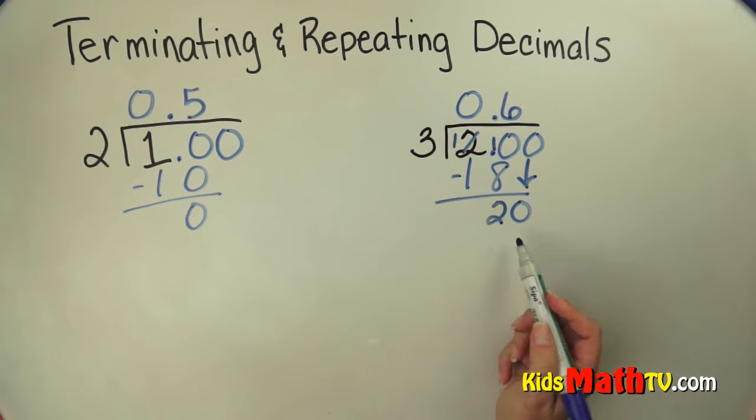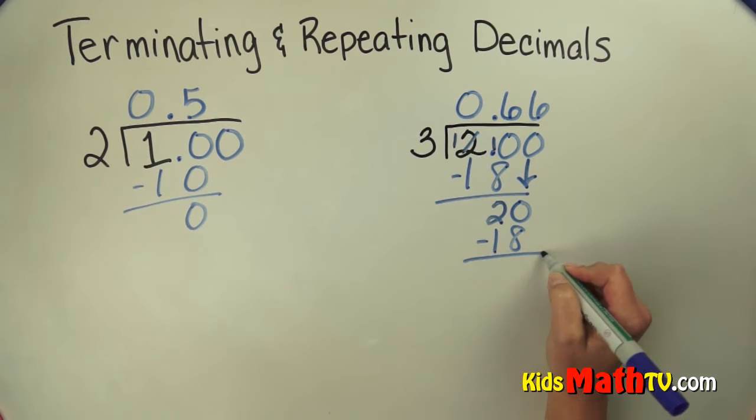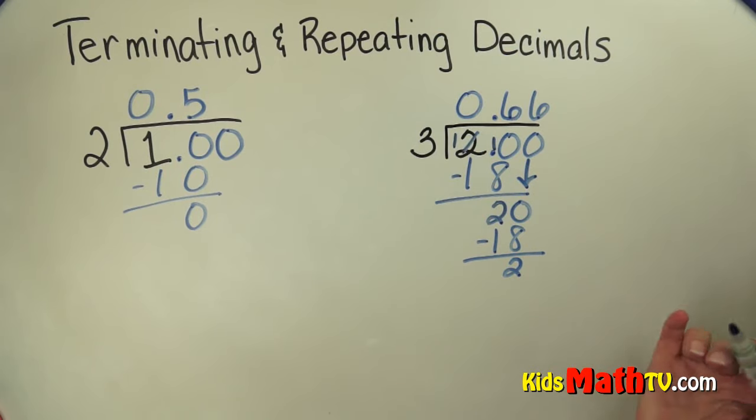Now how many 3's are in 20? Well 6. 6 times 3 is 18. Subtract. And again I'm going to get 20. And I will keep going like this forever and ever.